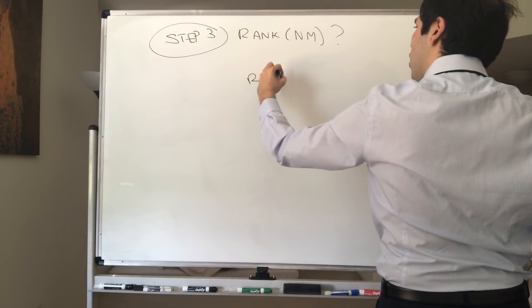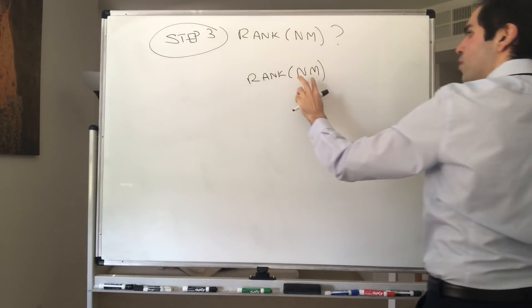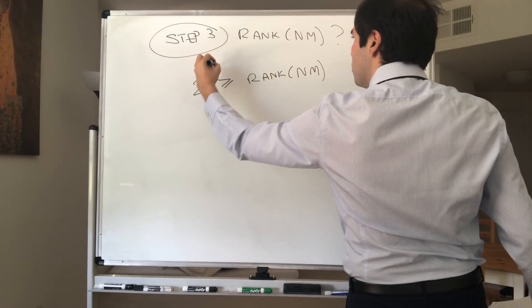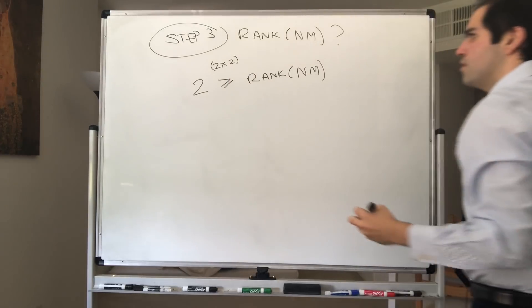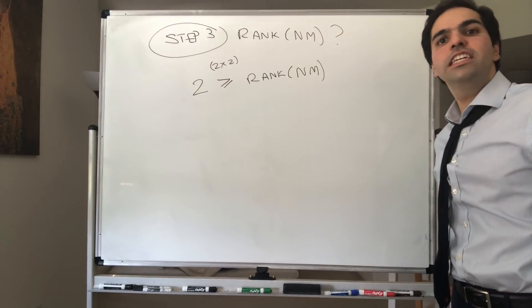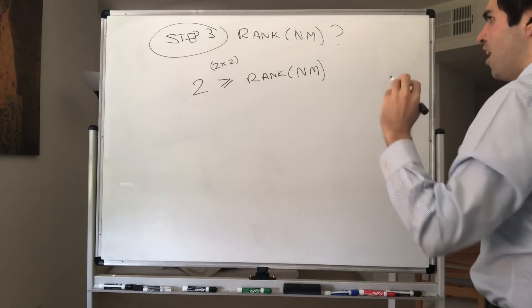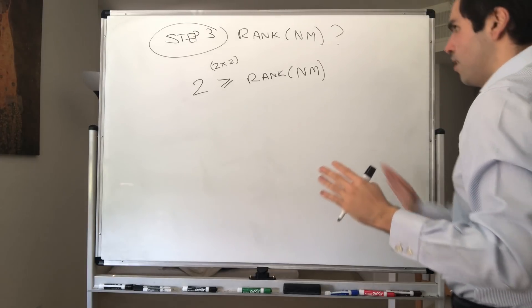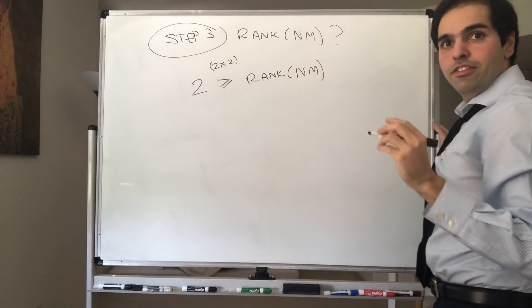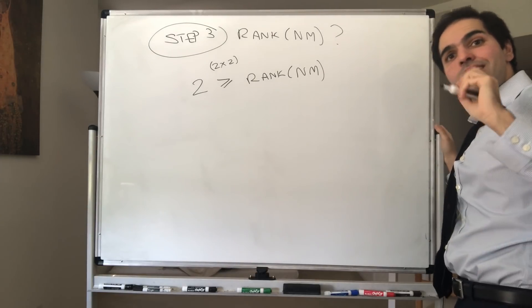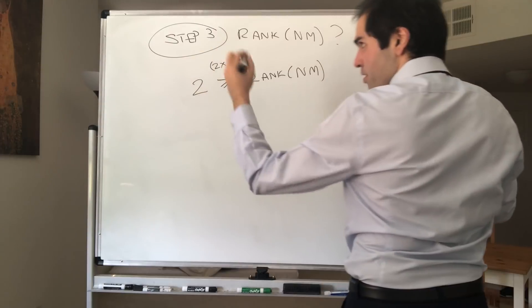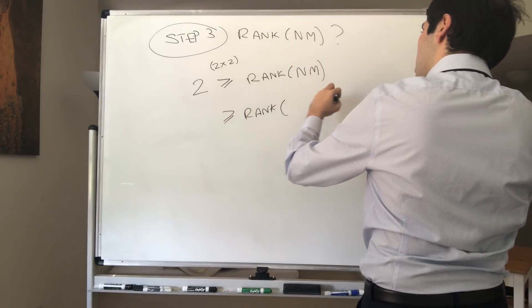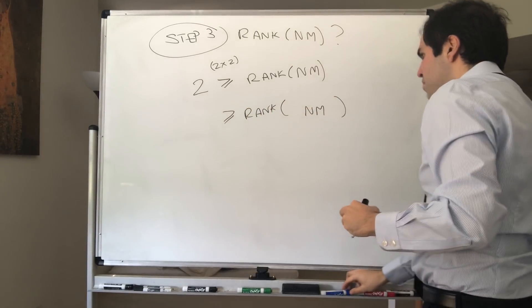Well, the rank of NM, well, this is actually a 2 by 2 matrix. So definitely this rank is less than or equal to 2. Because the rank is a dimension of the column space, and here we have at most two columns. So that's fine. On the other hand, what do we know? We know that we can just multiply this to the left and to the right. And remember, multiplying by A and C just decreases the rank. So, in particular, by the previous fact, this becomes greater or equal to the rank of NM, but then add MN MN.